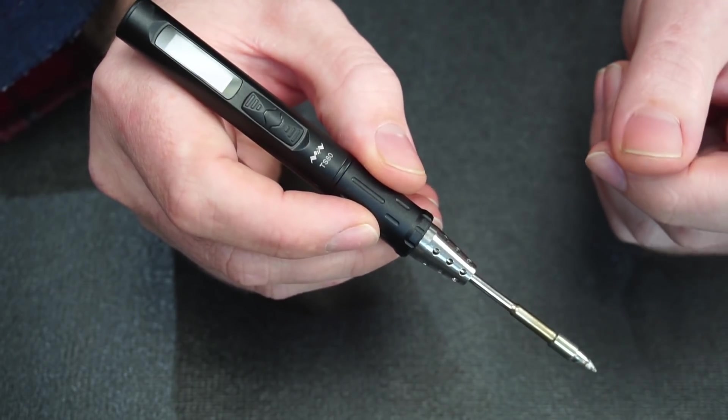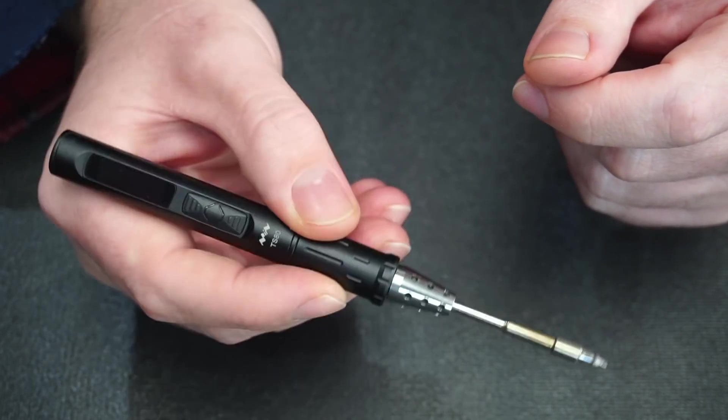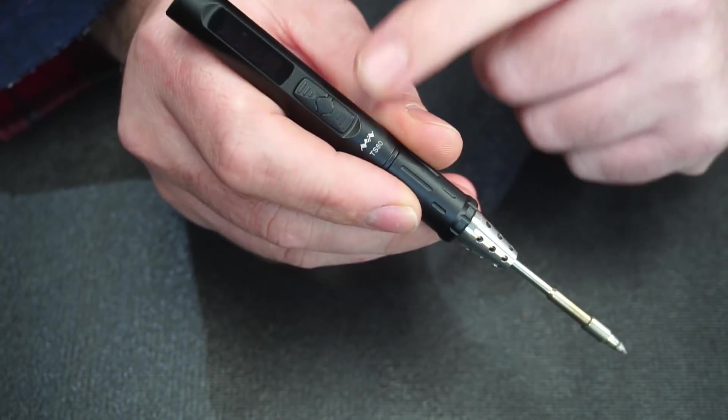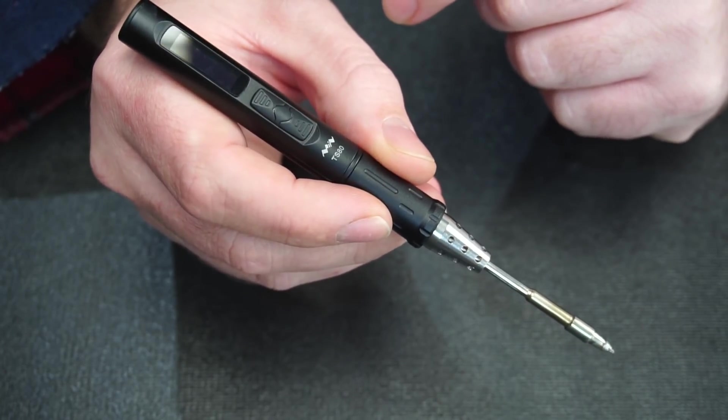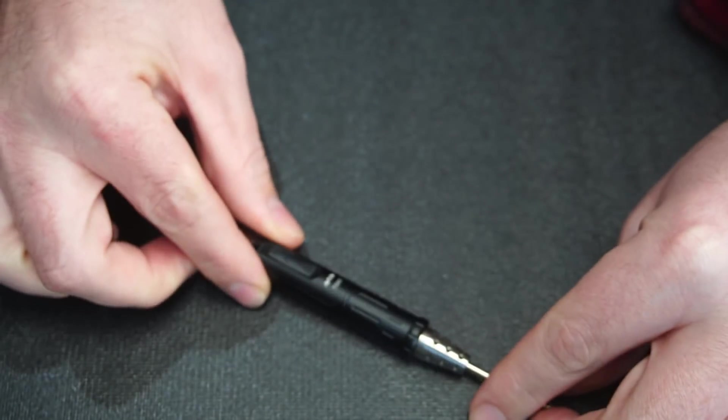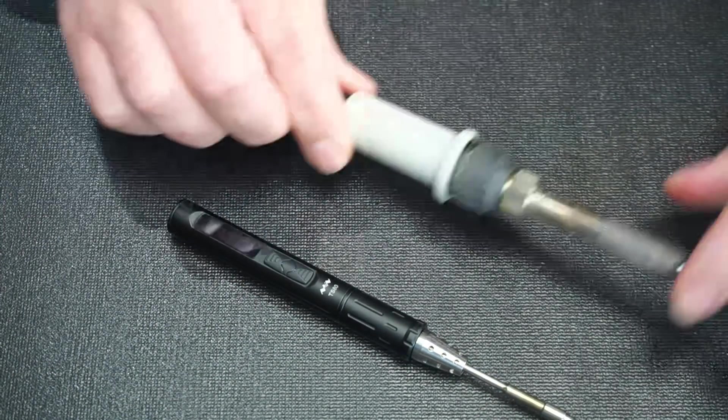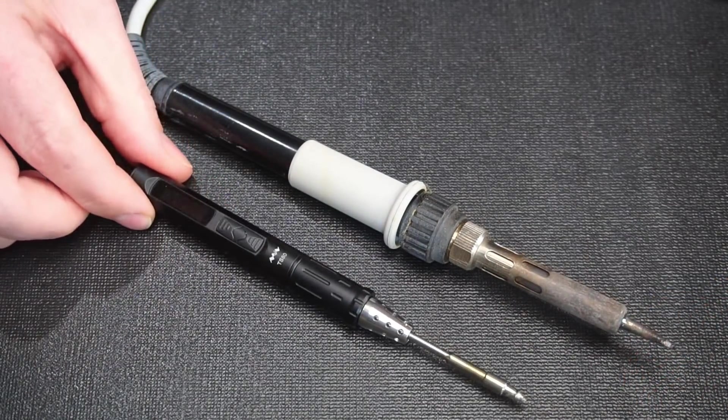The TS-80 is quite exceptionally compact and packs quite a punch for its size. It's a pleasure to hold and the body is made out of aluminum so it should stand up for many years of use. It also features quite a short grip to tip distance. And if we compare it to my daily driver soldering iron you can see just how small the TS-80 really is.